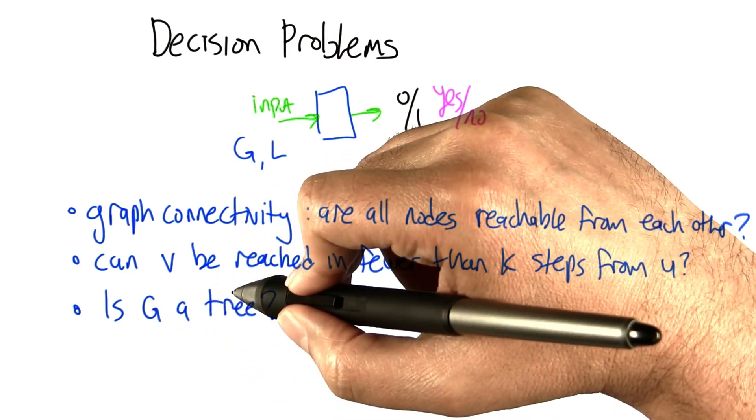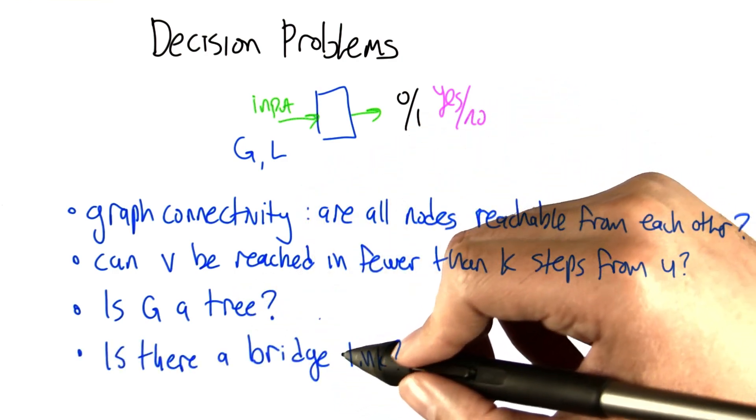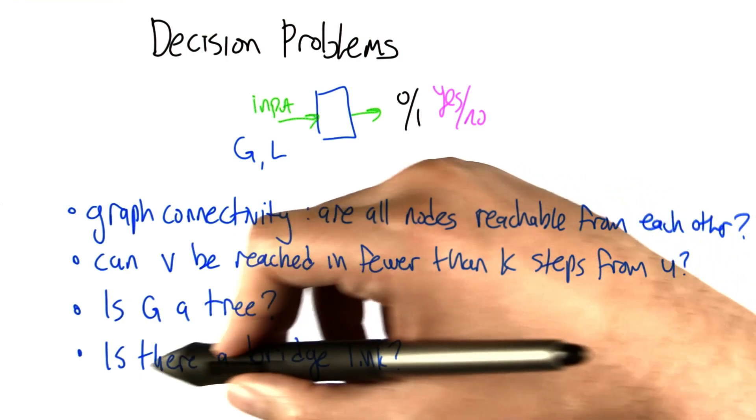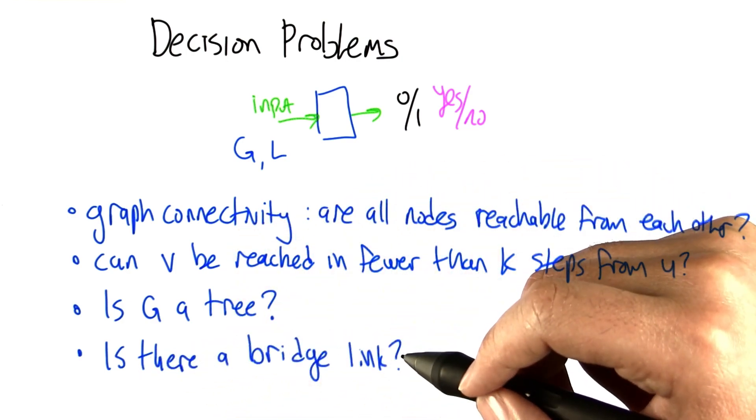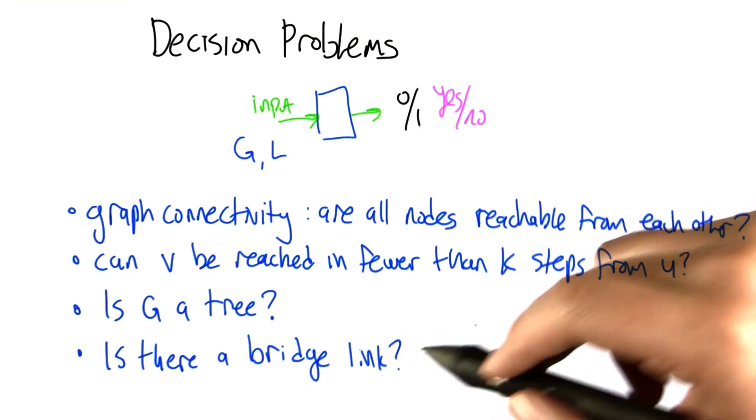For it to be a tree, it needs to be connected and not have any cycles in it, no loops. Another decision problem is, given a graph, is there a bridge link somewhere in the graph, an edge that if it gets removed, separates the graph into two separate pieces?